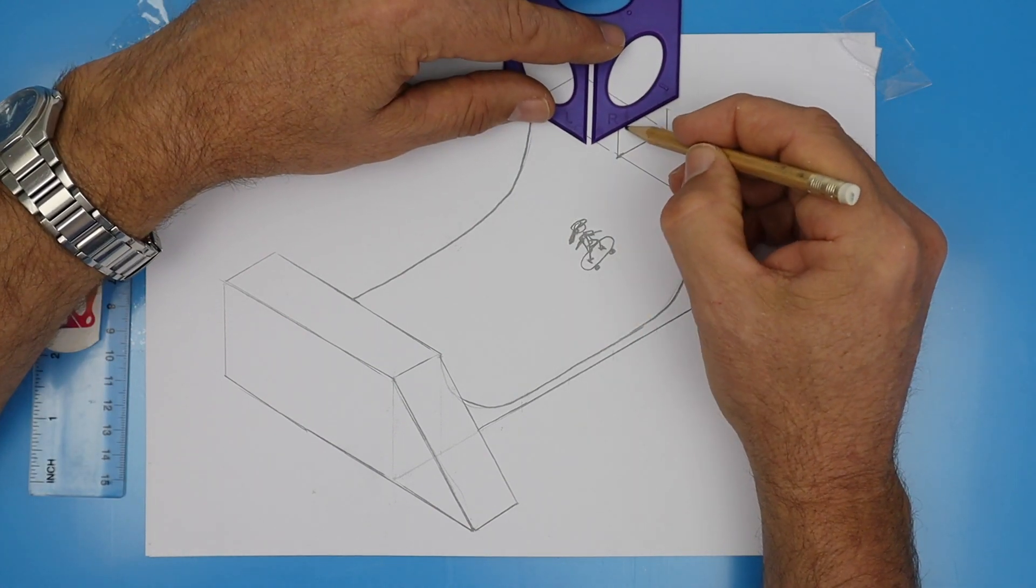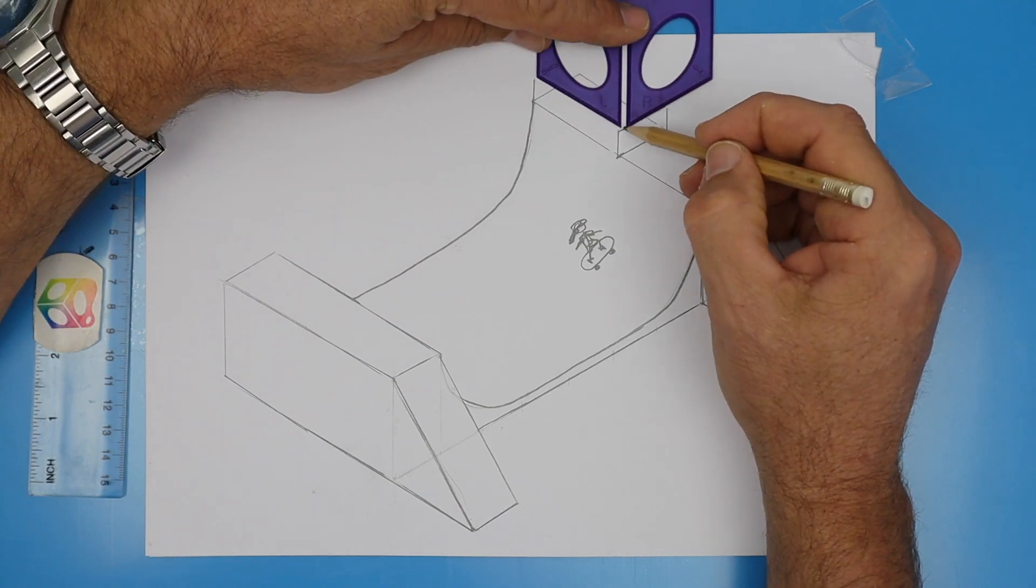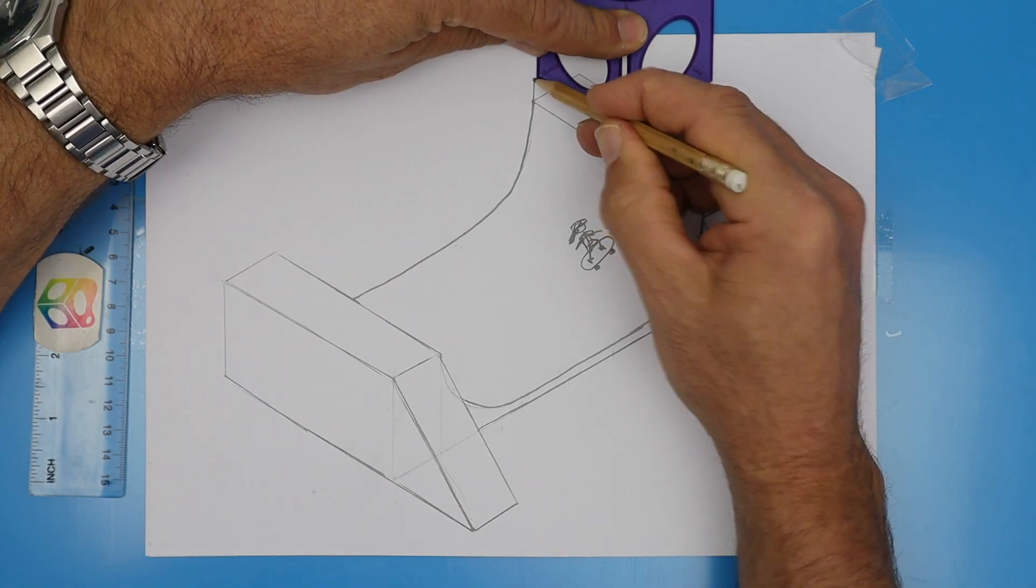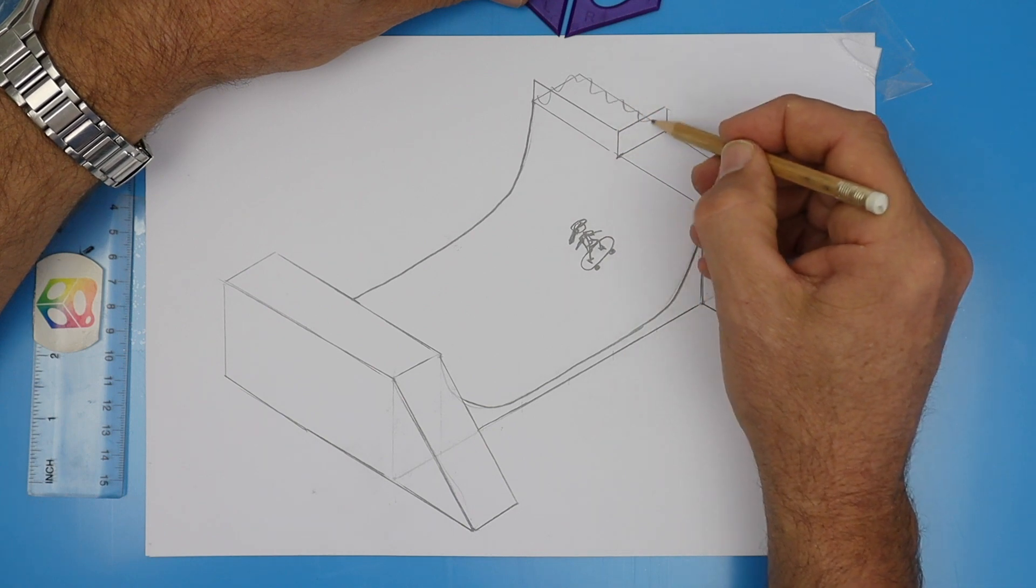Now connect the top of them using your splat and then out to the left. Great. Now I'm going to stop here and erase a few of the lines.